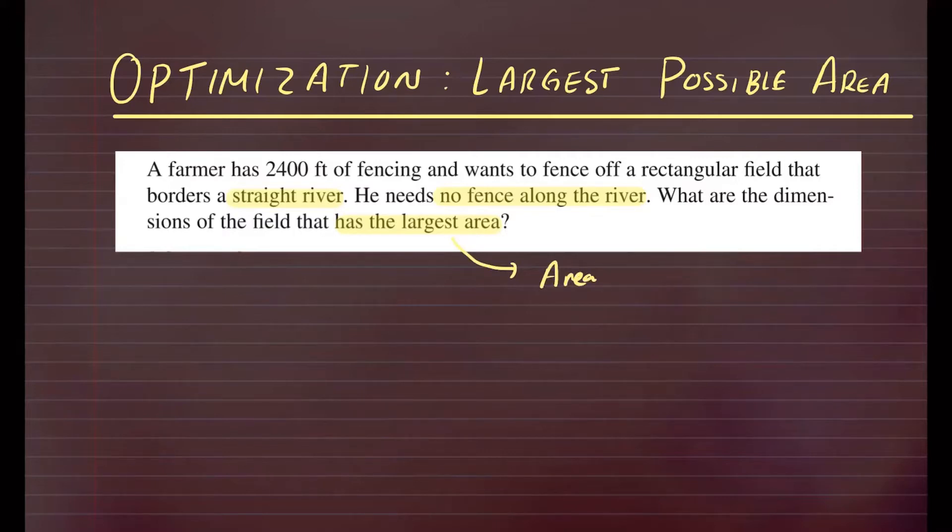So let's suppose this is our, now you can draw this in any direction you want. I'm going to go ahead and draw a rectangular field like this. And let's just say that we have the river right above, so the river is right here. Let's throw some fish in there. So let's give it some dimension. Let's call this x, this x, and this y.